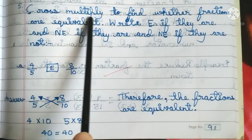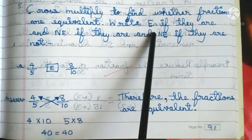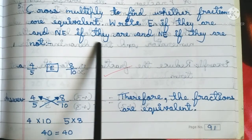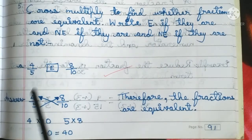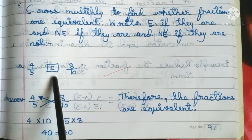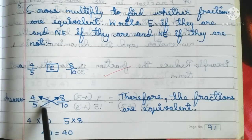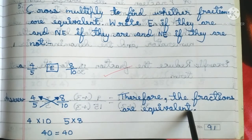Fifth main: Cross multiply to find whether the fractions are equivalent. Write E if they are, and NE if they are not. First one: 4 by 5 and 8 by 10. Answer: 4 into 10 is equal to 5 into 8, that is 40 equals 40. Therefore, the fractions are equivalent.